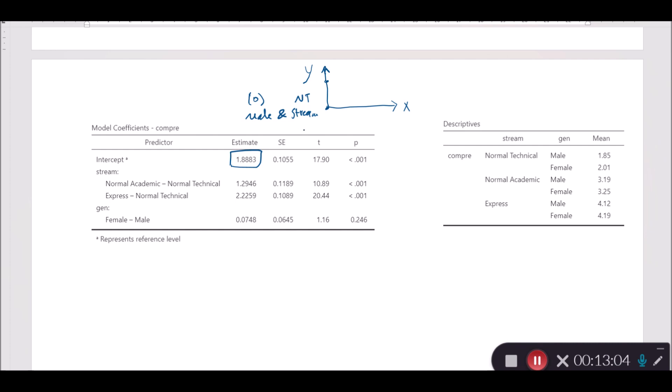The intercept represents the mean of males in the normal technical stream. I reiterate that the intercept here represents the mean of the male test takers in the normal technical group, which is around here. This will be our intercept, which is equal to 1.8883. That's the intercept of this regression model with two independent variables which are categorical. Once we set the intercept, or in other words the reference group, or if you like the base category, it goes by different names.